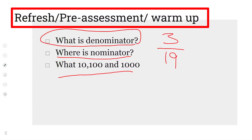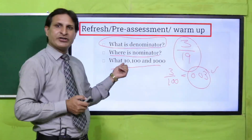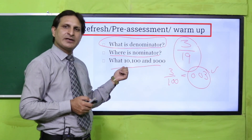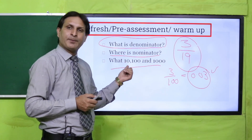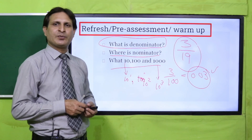जैसे कि यह एक simple common fraction है, और अगर इसका denominator जैसे 3 by 100 हो तो इसको easily decimal form में write कर सकते हैं। Basically हम लोग ऐसे decimals को consider कर रहे हैं जिनकी fraction का denominator power of 10 हो। 10 की power one होती है, 100 यानी 10 raise to power 2 है, और 1000 यानी 10 raise to power 3 है।